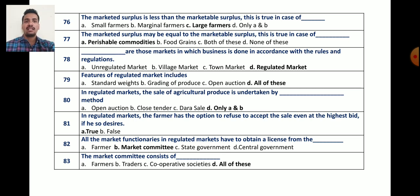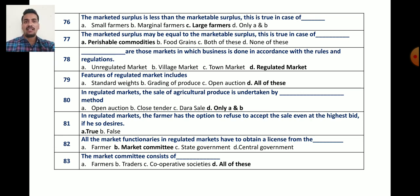Next, question number 78: blank are those markets in which business is done in accordance with rules and regulations. As we know, regulated markets are those markets in which business is done according to rules and regulations.